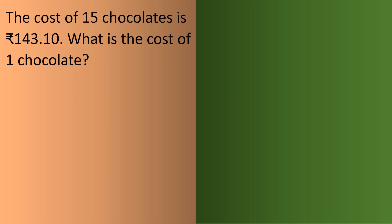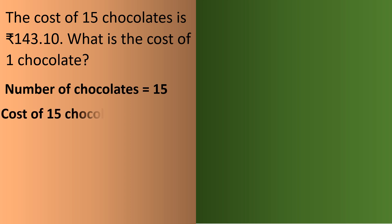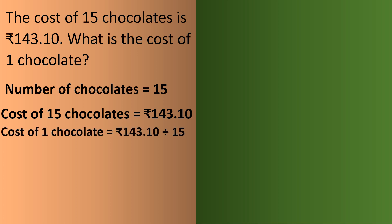Now let's do a word problem. The cost of 15 chocolates is rupees 143.10. What is the cost of one chocolate? Given: number of chocolates is 15 and the cost of 15 chocolates is rupees 143.10. We need to find the cost of one chocolate, so we divide: 143.10 divided by 15.